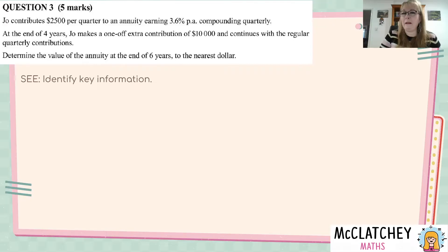I'm going to use Polya's SEE-PLAN-DO-CHECK model today to solve this problem, and I'm going to start by looking at some of the key information from this question. The first word that jumped out to me was the word annuity.